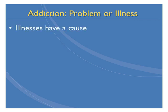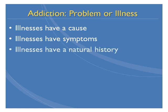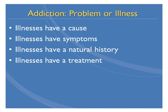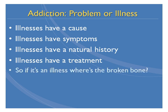All illnesses have a cause. All illnesses have symptoms which can be used to define them. Illnesses have a natural history — that is, if left untreated, the illness will always do the same thing. And all illnesses have treatment. Some treatment may work better than others, but to one degree or another, all illnesses have some treatment. The most important thing that defines an illness is that there's something that doesn't work right — some cells or organ system that doesn't do what it should do.